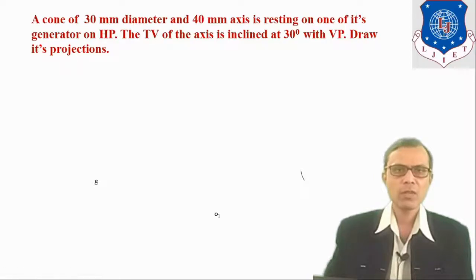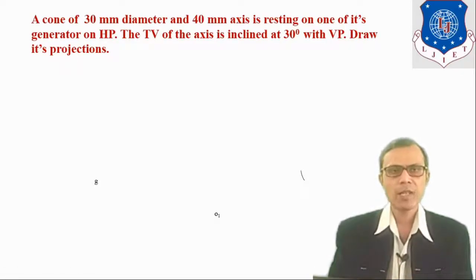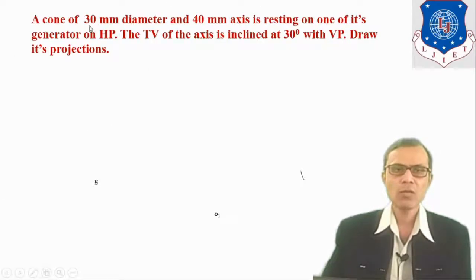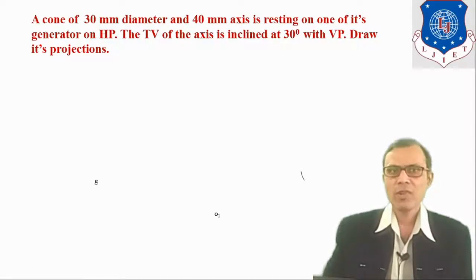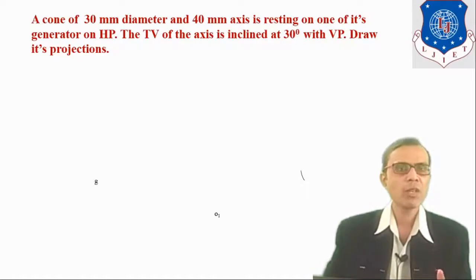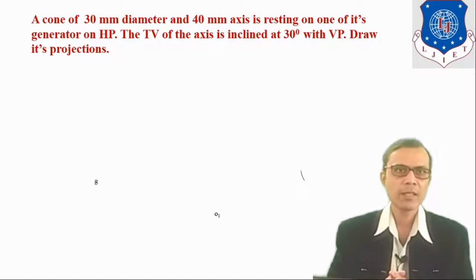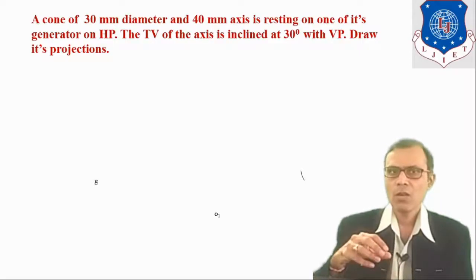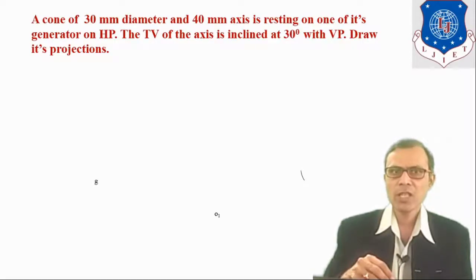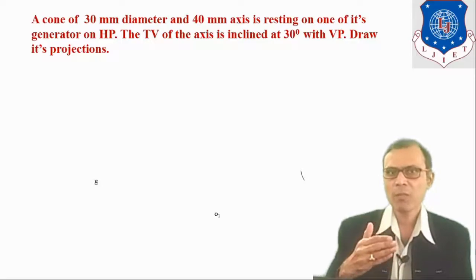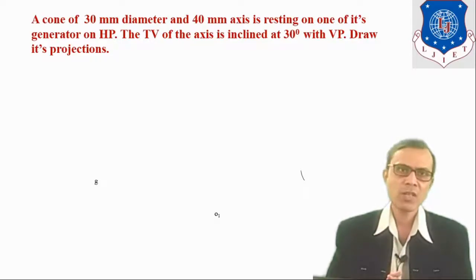First of all, let's identify the given data. The type of solid is a right circular cone. The diameter of the base is 30 mm and the axis height is 40 mm. In the first stage, we will consider that it is standing on HP with its base on HP, so that the axis is perpendicular to HP. That would be our first stage.